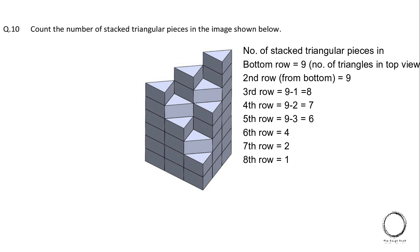Fourth row there is 2 less, so 7. Fifth row there is 3 less, so 6. Sixth row there are 4. Seventh row there are 2. And eighth row there is 1. So adding all of this, the right answer is 46.